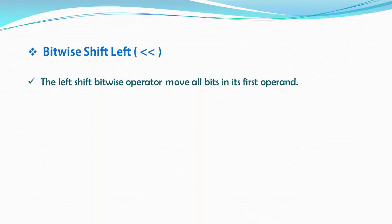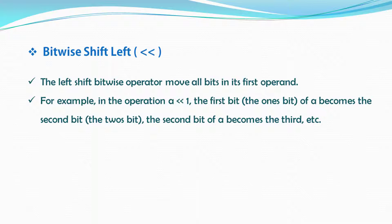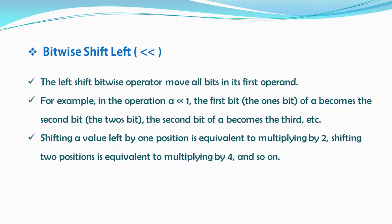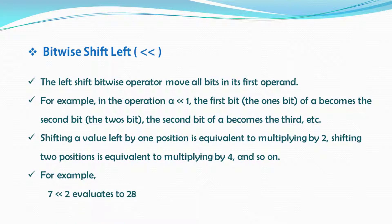The next operator is shift left. The shift left bitwise operator moves all bits in its first operand. For example, in the operation A shift left one, the first bit of A becomes the second bit, then the second bit of A becomes the third bit, and so on. Shifting a value left by one position is equivalent to multiplying by two, shifting two positions is equivalent to multiplying by four, and so on. For example, seven left shift two, when you execute this statement, the result would be 28.